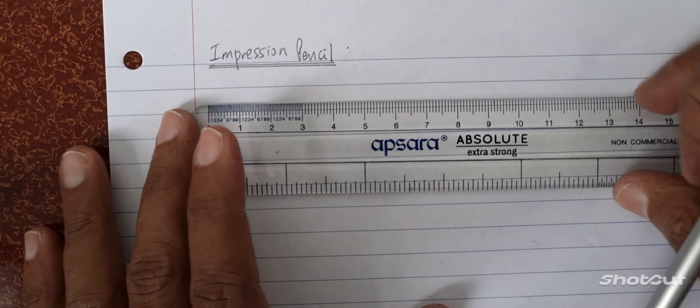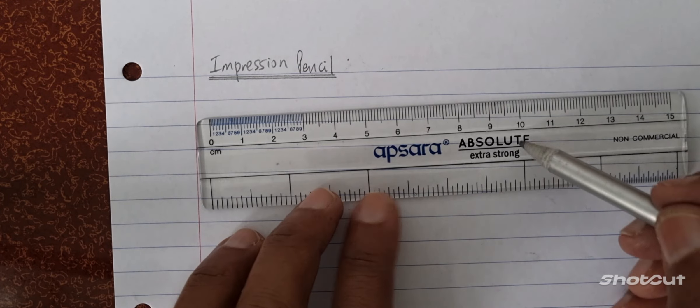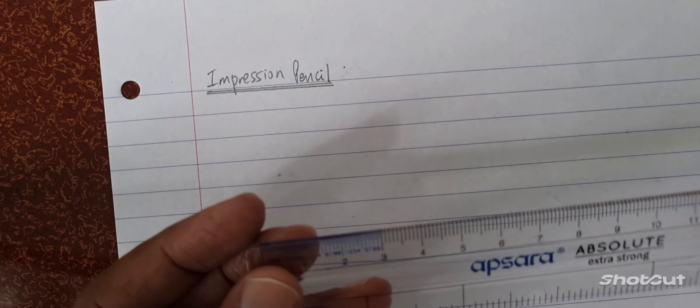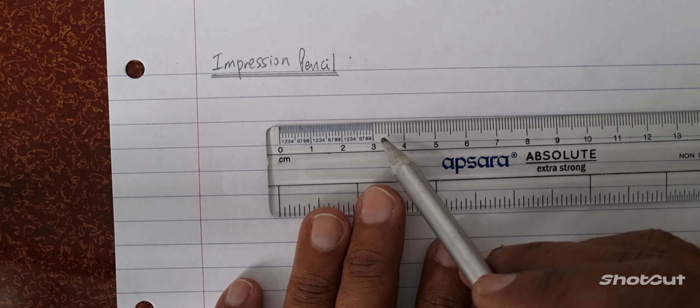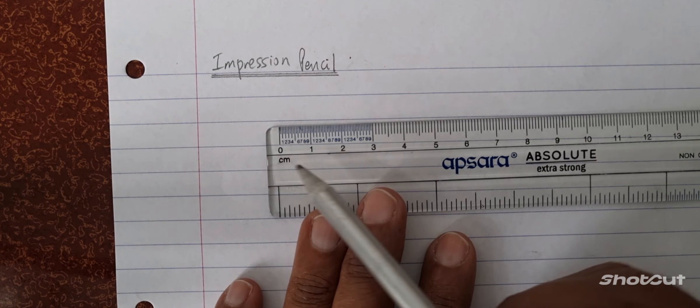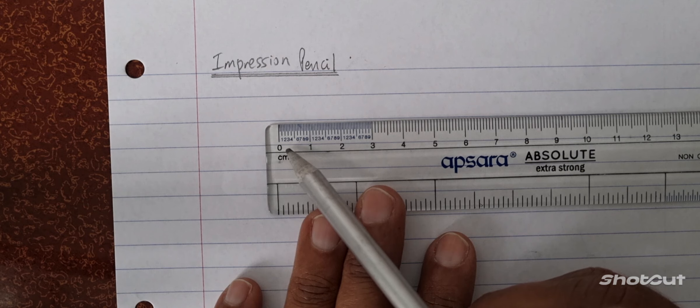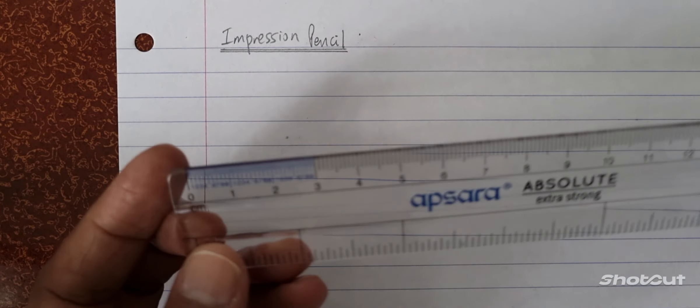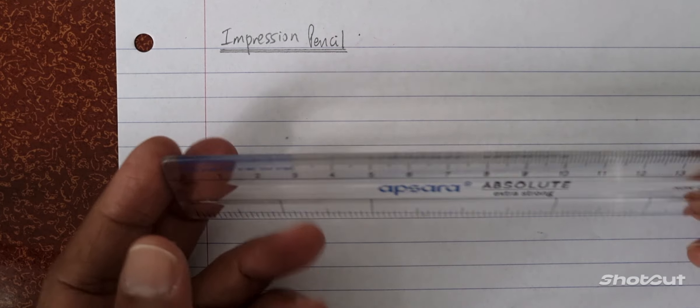Great pencil, right? Absolute extra strong millimeters. Each millimeter is broken down into two. Listen, I'm not an architect, so I'm not going to go into reviewing this ruler anyway, which is a beautiful one.